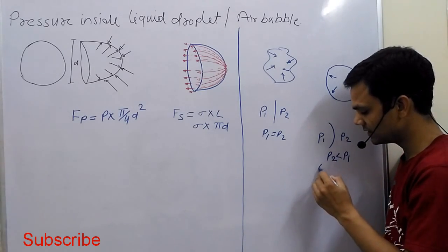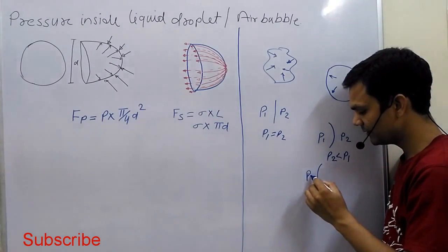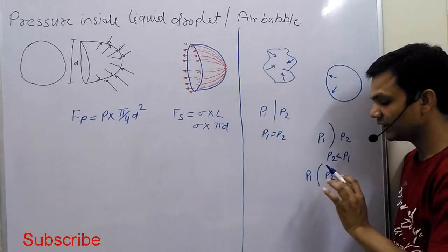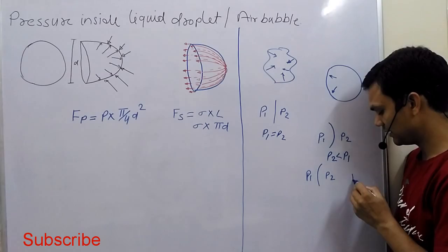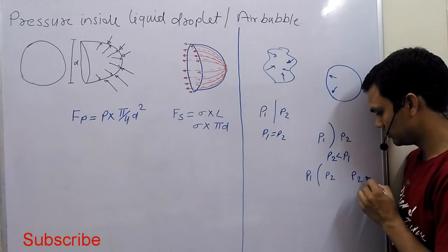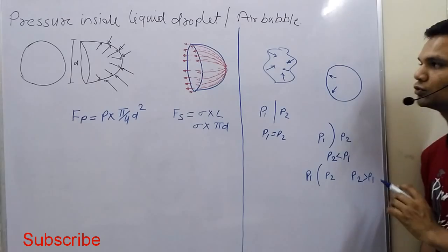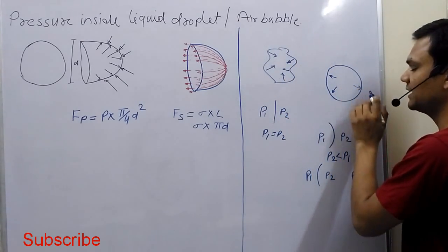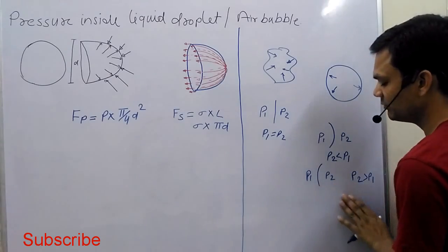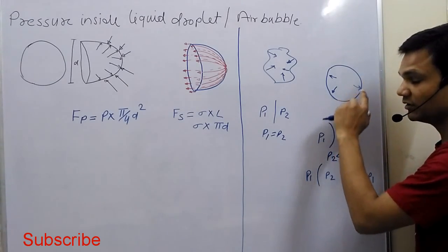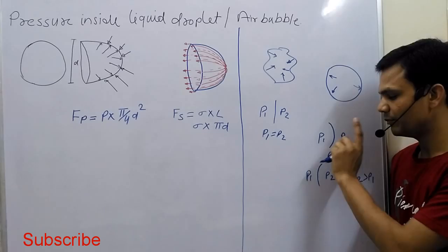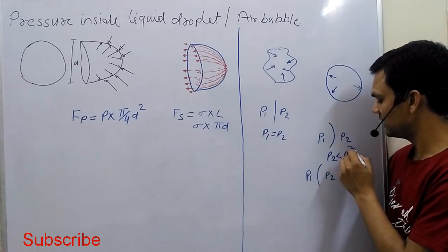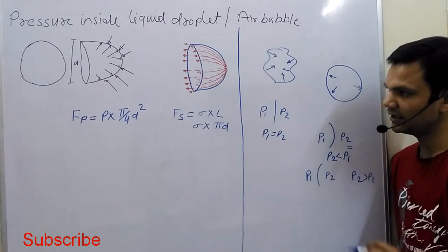Now take another case where P1 and P2 are reversed. Pressure P2 is more so it tries to push on that side, making P2 more than P1. So we understand any shape tries to convert into spherical shape, because spherical shape has minimum cross-section and minimum surface area. This also explains how pressure inside a droplet is more than outside.